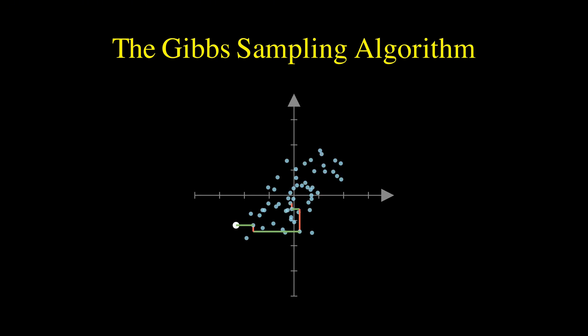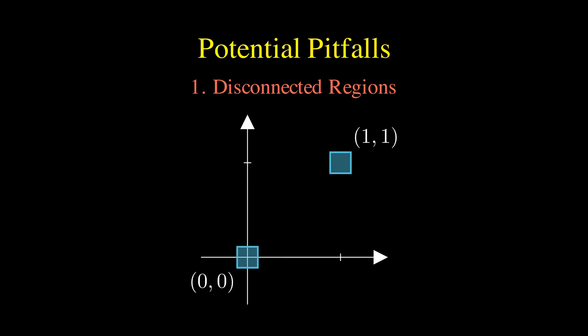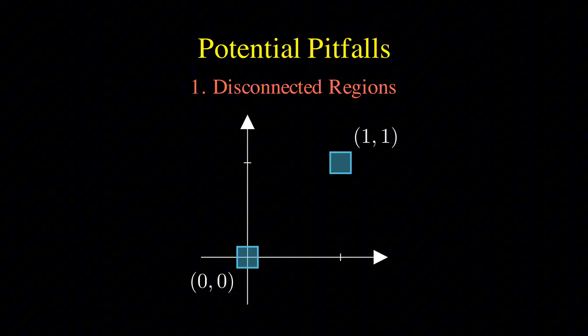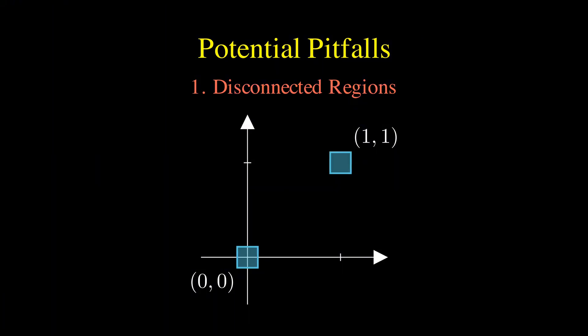But Gibbs sampling isn't perfect. Let's look at a potential pitfall. Imagine a distribution with two disconnected high probability regions, like one at 0,0 and another at 1,1, with zero probability everywhere else.